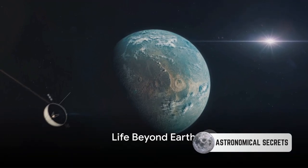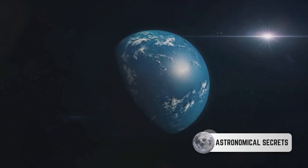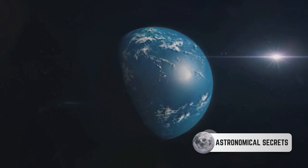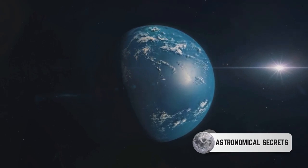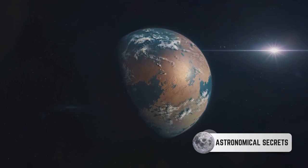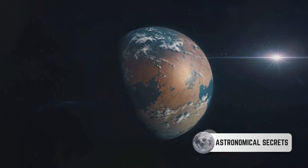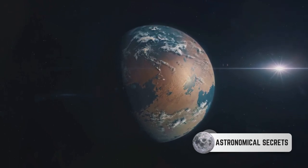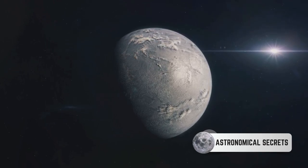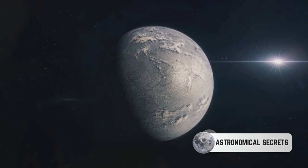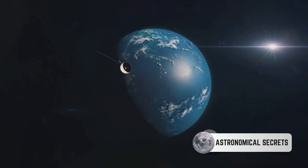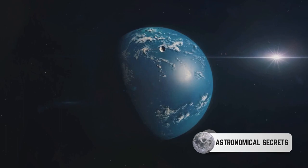Could any of these alien worlds harbor life as we know it? The answer to this question leads us to the concept of the habitable or Goldilocks zone. This is the area around a star where conditions are just right, not too hot, not too cold, for liquid water to exist on the surface of a planet. It's akin to the story of Goldilocks and the Three Bears, where the porridge had to be neither too hot nor too cold, but just right. The presence of liquid water is a key ingredient for life as we know it. That's why scientists get particularly excited about discovering exoplanets in this Goldilocks zone. But it's not just about the right temperature. A planet's atmosphere and composition also play crucial roles in determining its habitability.